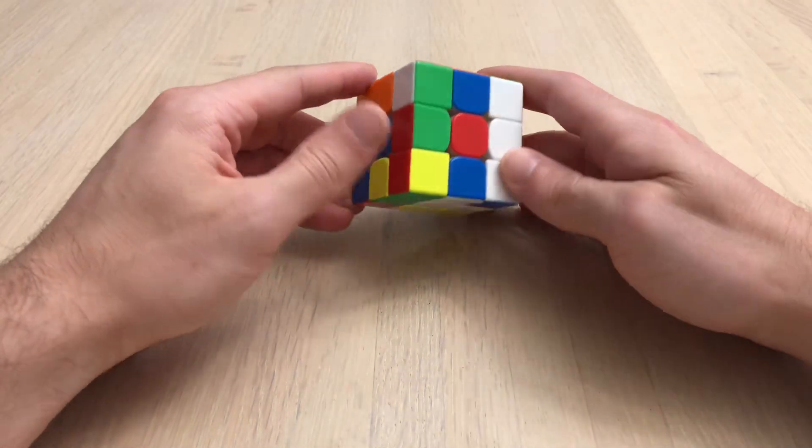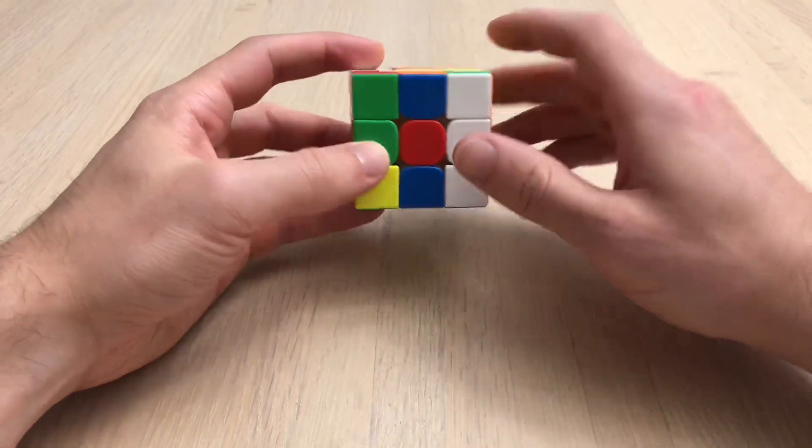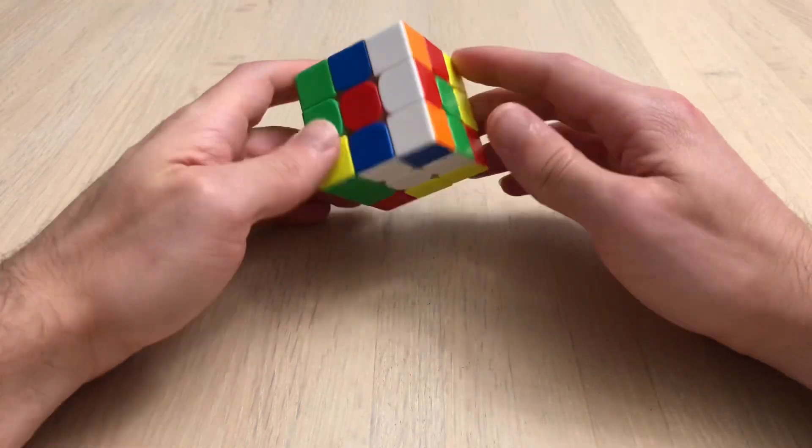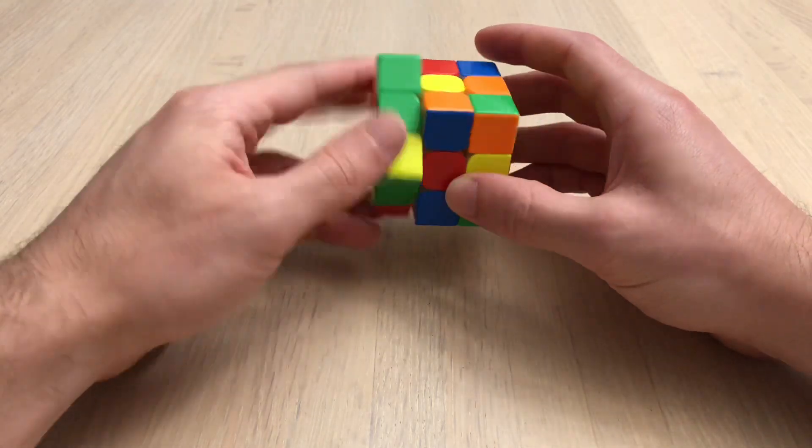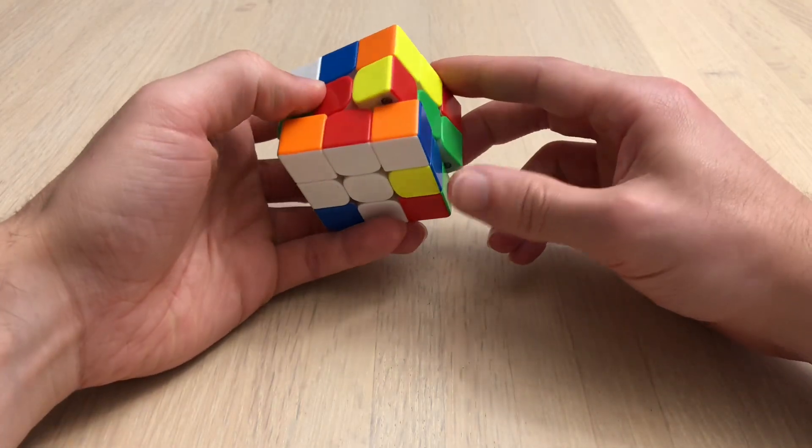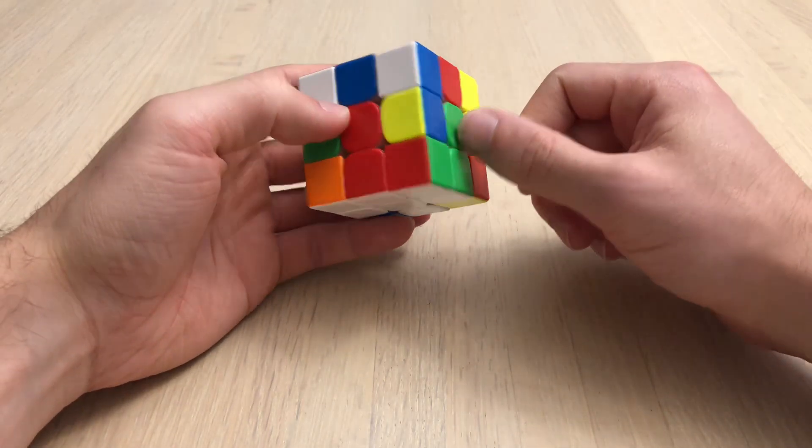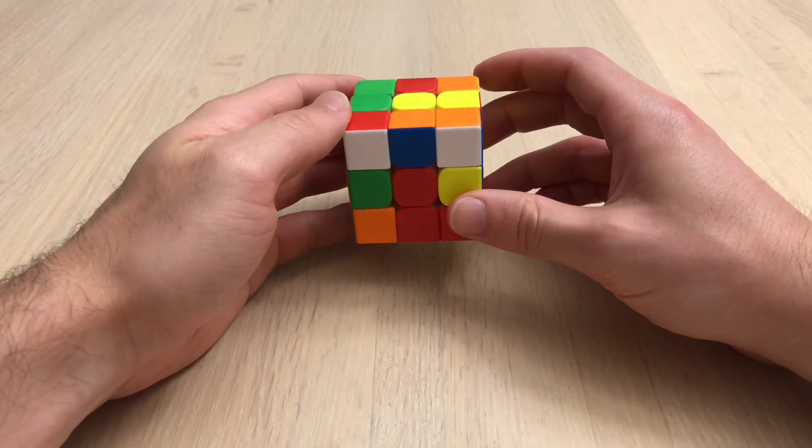Sixth scramble. See all the white cross edges right away. I'm going to move this down, this one down, lastly green.